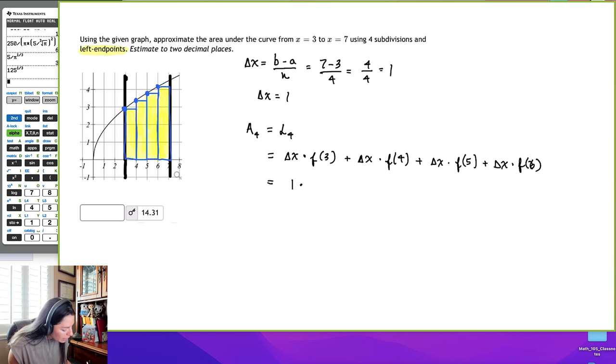So I would just estimate that this is about 2.8 plus 1 times, I don't know, 3.4 plus 1 times 4.6. I don't know how close I'm going to get, but this is how I see it. And then the last one right here is about 4.2.